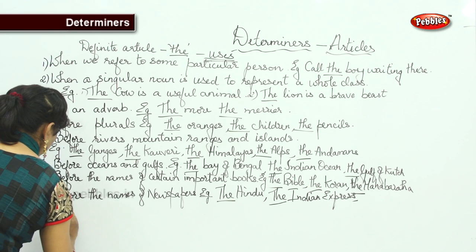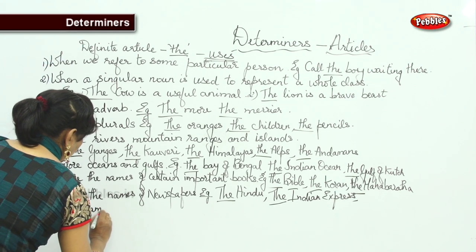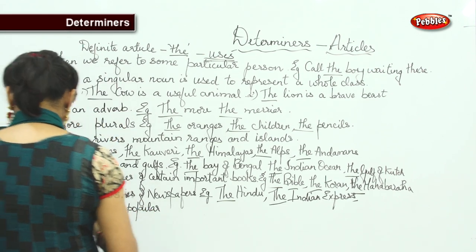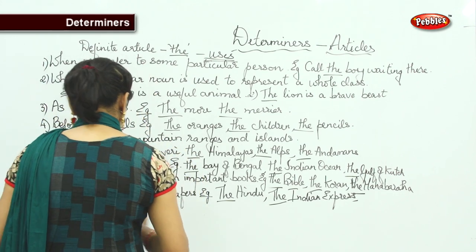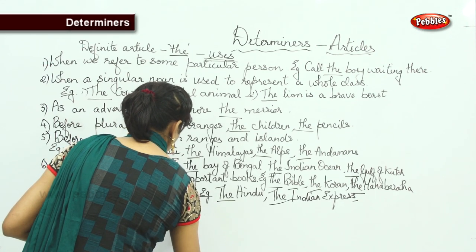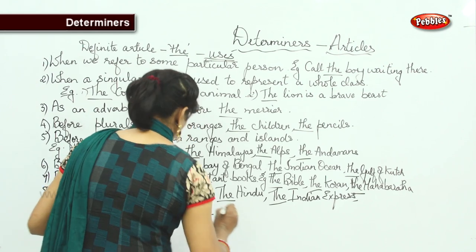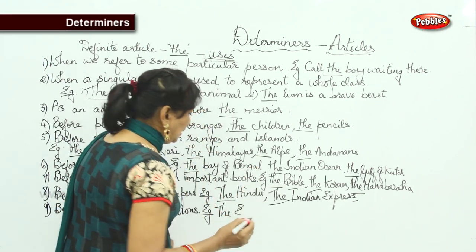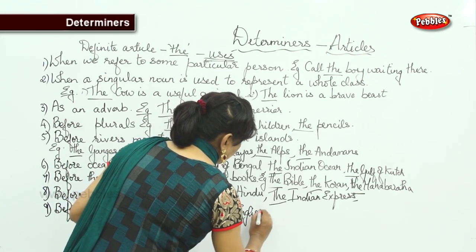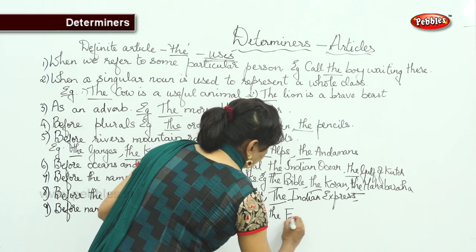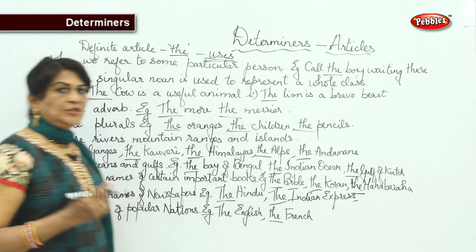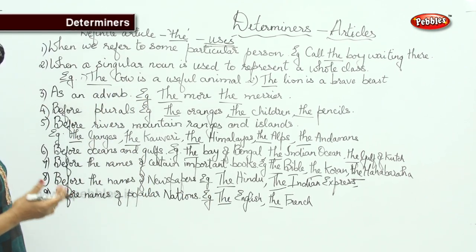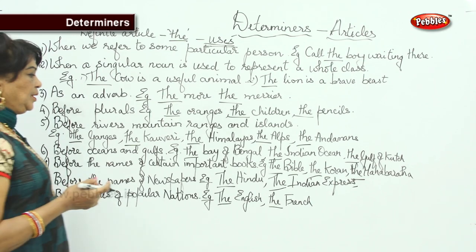Next: we use 'the' before names of popular nations — referring to the people of those nations. For example: 'the English' refers to the people of England, 'the French', 'the Turkish', 'the Dutch'. So before the names of people belonging to popular nations, we use 'the'.